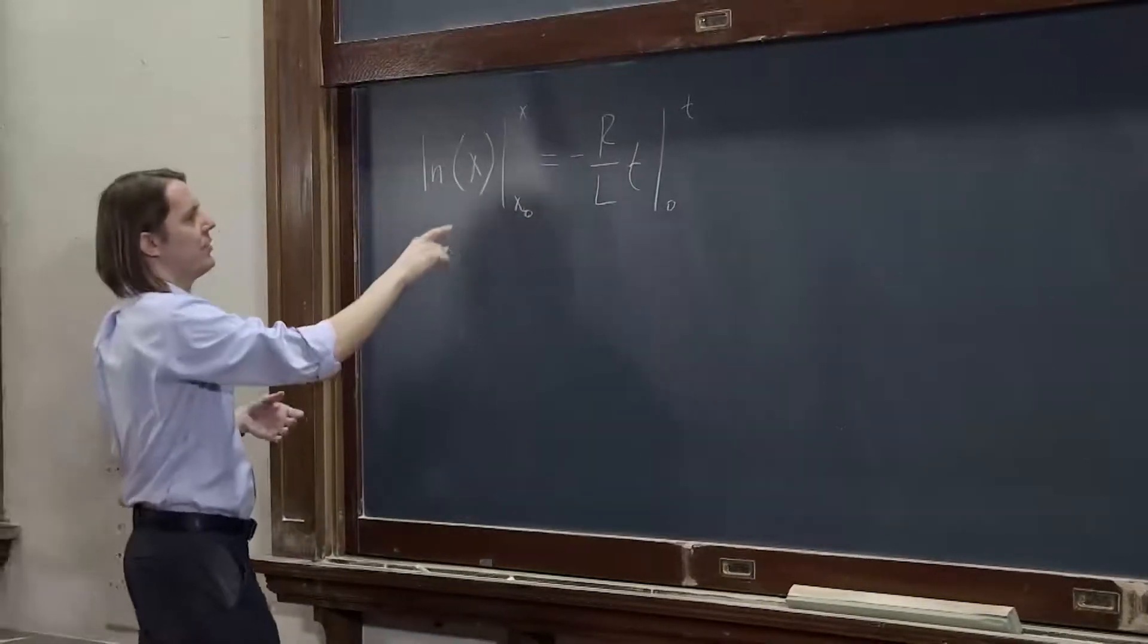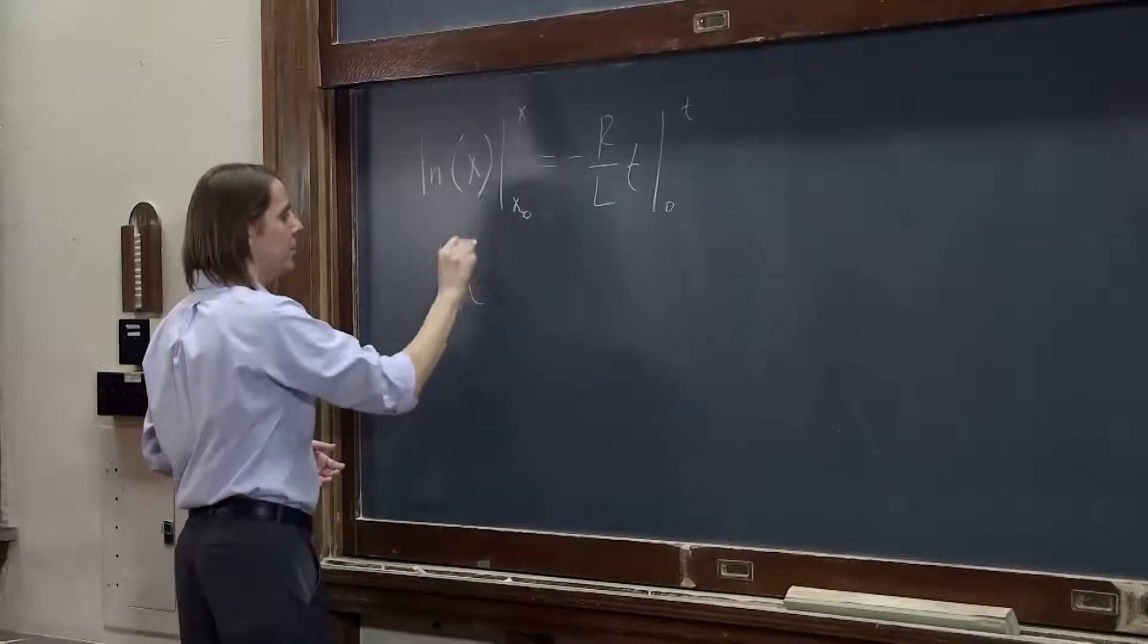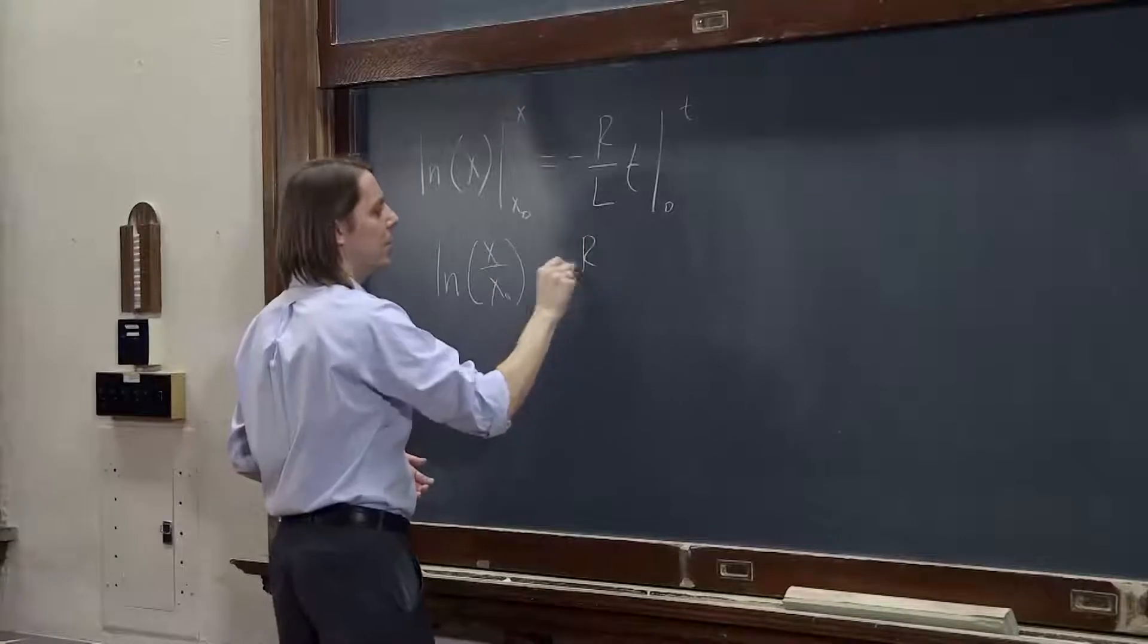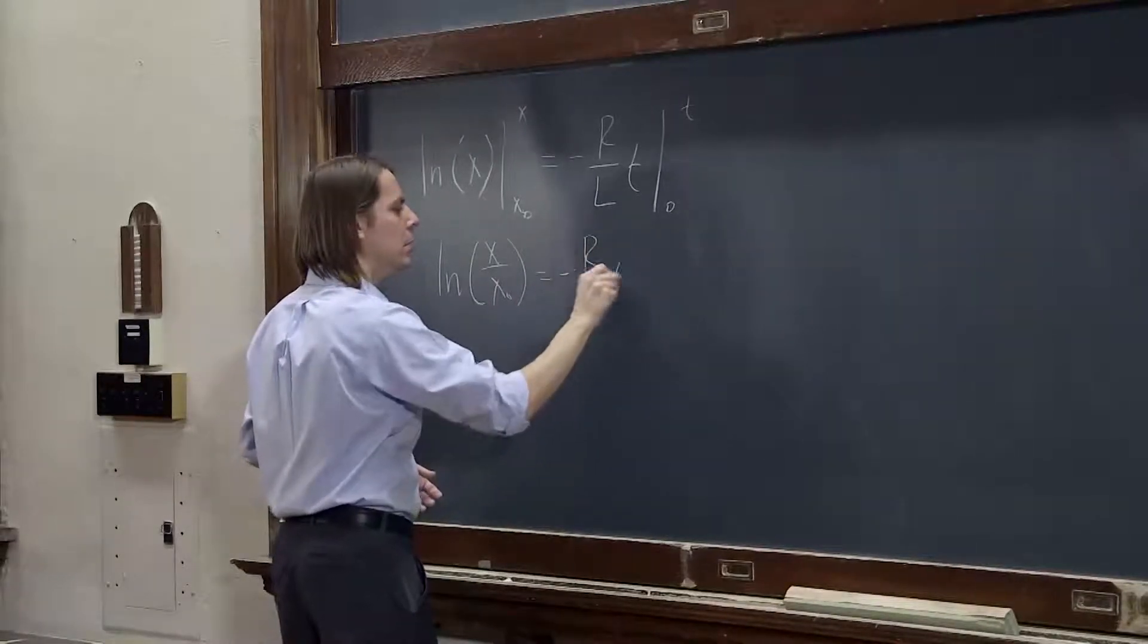so this becomes the natural log of x over x naught. The natural log of x minus natural log of x naught is natural log of x over x naught, and this becomes minus r over l t,